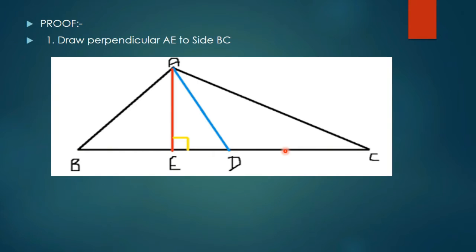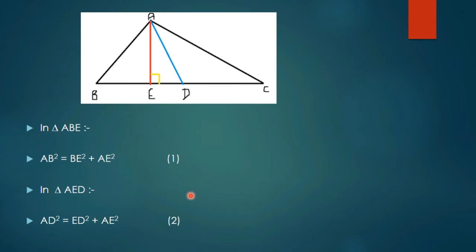To prove this, first we have to draw a perpendicular AE to side BC. As you can see, AE is perpendicular to BC.